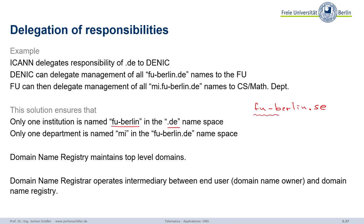That is feasible from a DNS perspective — it's still unique because SE for Sweden is not the same as Germany. But then we would run into legal issues because of the Freie Universität Berlin trademark, etc. So we wouldn't like this. And Freie Universität takes care that there's only one department called Math Informatics — the Math CS department.